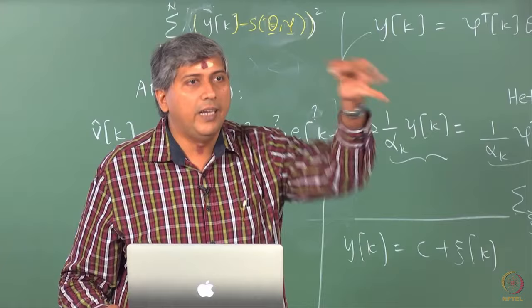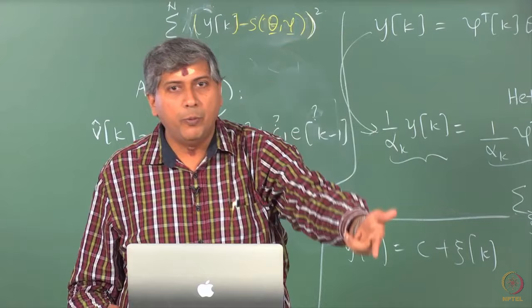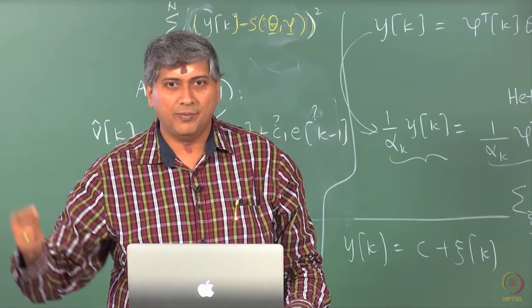Gauss-Newton says: given an initial guess, I will construct a linearized version of S around theta — that is one way of looking at the Gauss-Newton method. There are two perspectives: one is that it replaces the Hessian calculations in Newton-Raphson with something else. The other perspective, which I prefer, is that it is solving a locally linear least squares problem — at every guess of theta it linearizes the predictor, solves a least squares problem, and improves the guess.